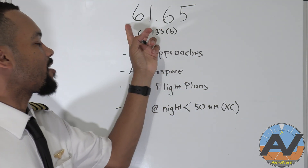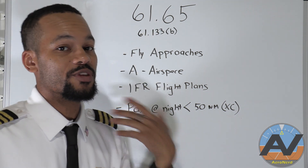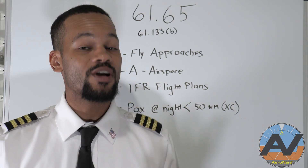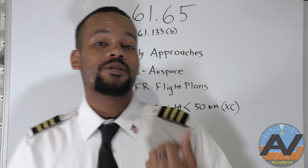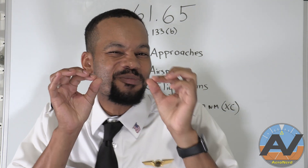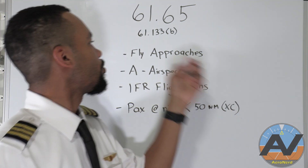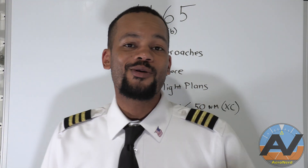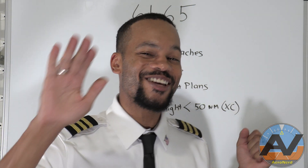I'm going to start with 61.65. You need to be really, really familiar with this. This is what the examiner is going to be expecting you to have completed before the checkride. Speaking of privileges and limitations, they are kind of hidden inside of commercial, a little bit of private, a little bit here and there. One of the things that is kind of hidden in there is 61.133B, where it talks about the privileges of a commercial pilot.